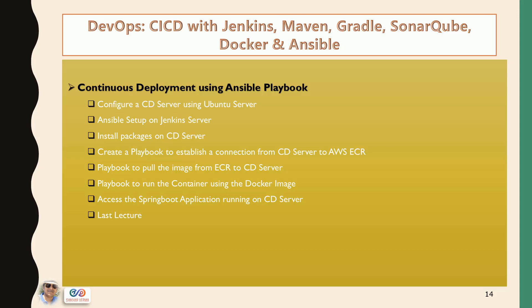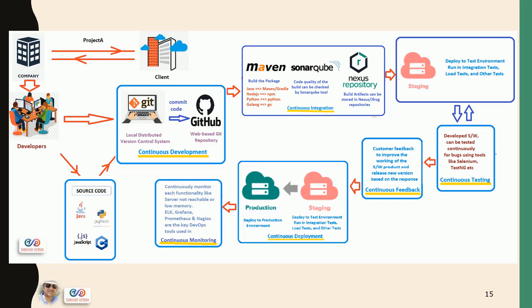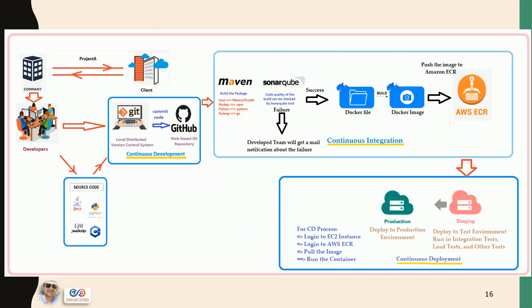In the final section, we'll understand continuous deployment using Ansible playbooks. We are using different tools in different phases of the DevOps lifecycle. I have created an important diagram showing which tools come under which phase — continuous development, continuous integration, continuous testing, continuous deployment, and continuous monitoring. In the CI/CD diagram, Maven, SonarQube, Docker, and AWS ECR are used in continuous integration, while AWS ECR, Docker, and Ansible are used in continuous deployment.